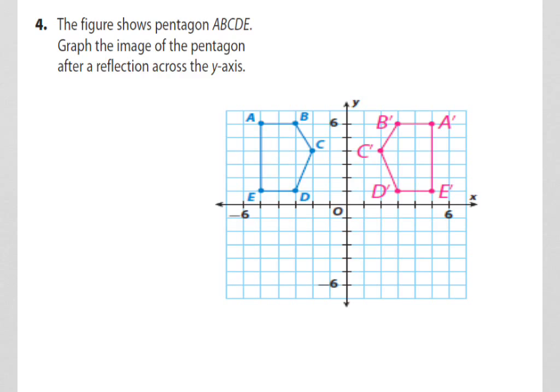B is 1, 2, 3 units. So let's make sure we put B-prime 1, 2, 3 units. C is 1, 2 units. So let's make sure we put C-prime 1, 2 units. D is 1, 2, 3 units, same as B. And let's make sure we put it 1, 2, 3 units. And lastly, E is 1, 2, 3, 4, 5. And we put it 1, 2, 3, 4, 5 units.